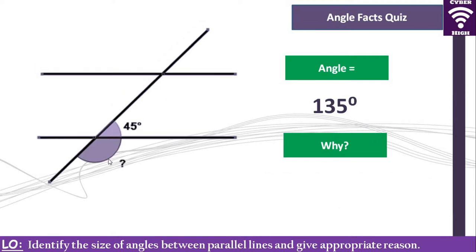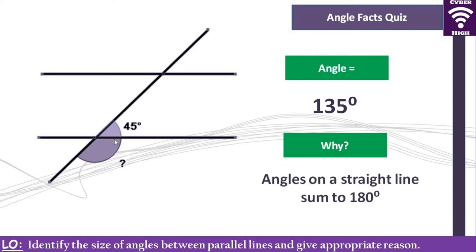The next question: what is the size of this angle? It is 135, but why? These are angles on a straight line — they add up to 180. If you had already identified the previous angle as 135, you could also say it is an F angle with that one. But if you were only given 45 degrees, you must tie your reason to the position of the angle given.